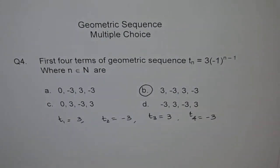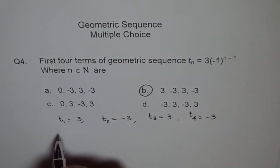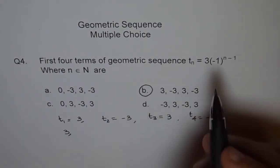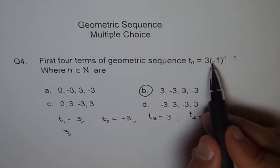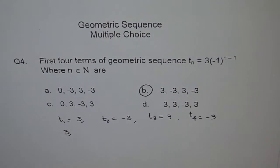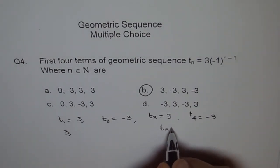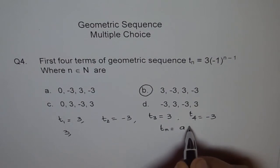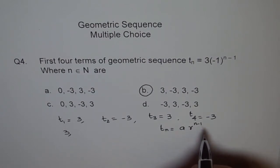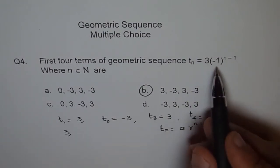Another way to look into it is like this. The first term A is 3, and then we multiply each time by minus 1. Because the geometric formula is Tn equals A times R to the power of n minus 1. So the first term is A, and every time you multiply by R, which is minus 1 here.